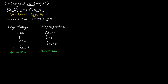So in general, you have aldoses and ketoses. Then usually, if it's a three-carbon sugar it's a triose, four carbons would be a tetrose, pentose for five, hexose for six, and so on and so forth. Really anything that ends in -ose is a sugar of some sort.